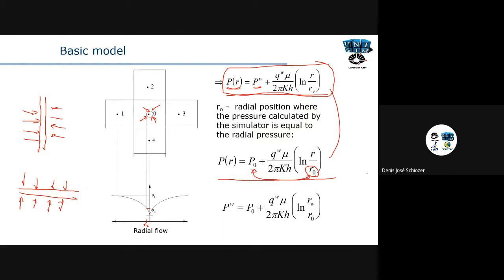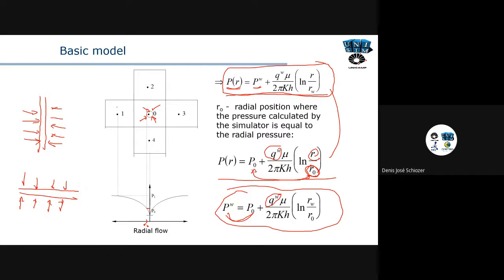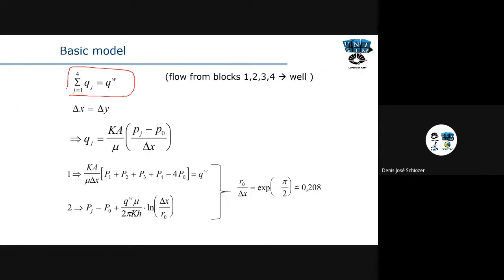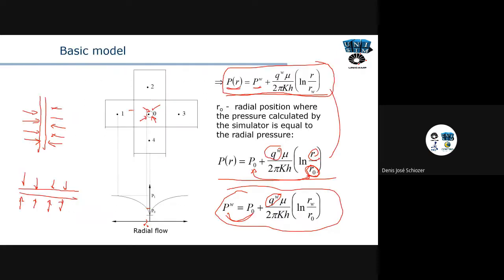In this model we follow the radial flow equation: the rate of the well is written as a function of pressures and block properties. The key variable is r0, the radius at which the pressure equals p0 — the block pressure. We don't take the exact center of the block because the pressure distribution is logarithmic, so r0 is the specific point where that average block pressure occurs.